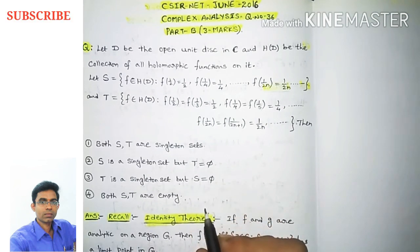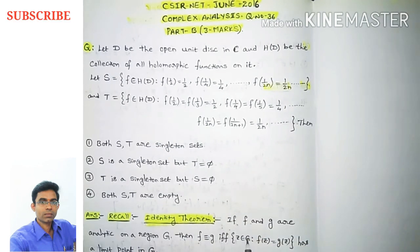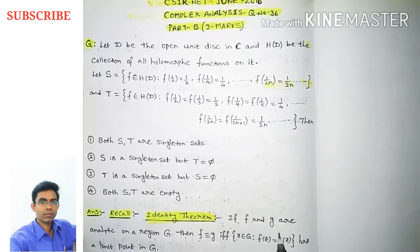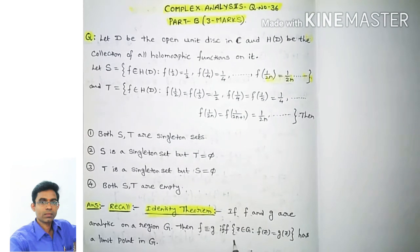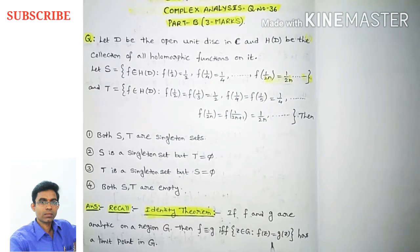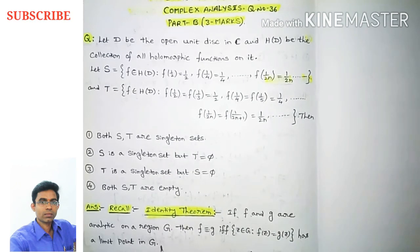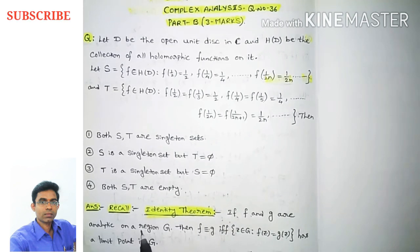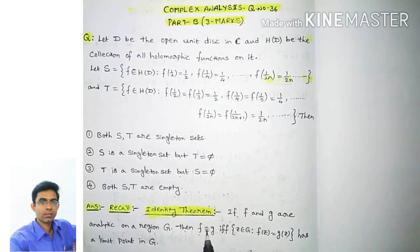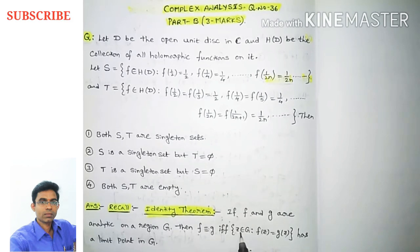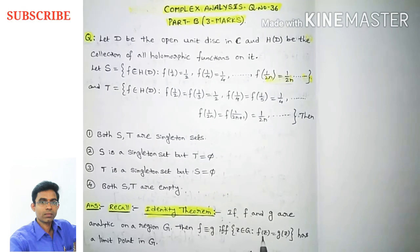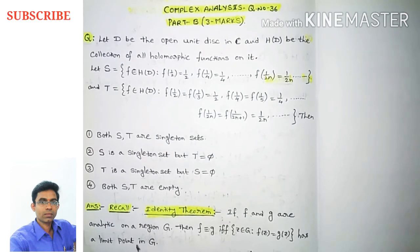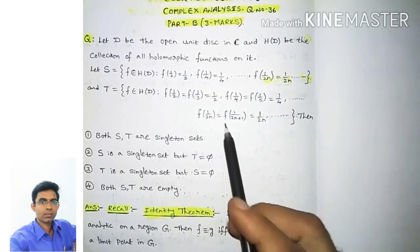First we recall the identity theorem. The statement is: if F and G are analytic on a region capital G, then F is identically equal to G if and only if the set of all z in G such that F(z) = G(z) has a limit point in that region capital G.